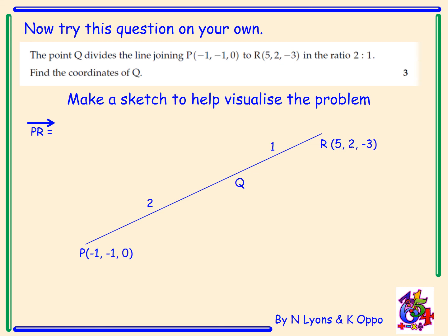Right, hopefully this wasn't too hard. Let's go over it then. So you made a sketch to help visualize the problem. We've got point P. We've got point R. The first thing you have to do is work out the vector PR. So PR equals (6, 3, -3). Now from P to R, that's the same as going along three steps. 2 plus 1 equals 3 steps. So from that you can calculate what one step equals. So one step along the line equals (2, 1, -1). We're just dividing by 3, each component by 3.